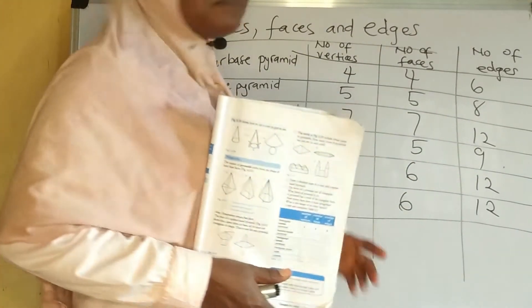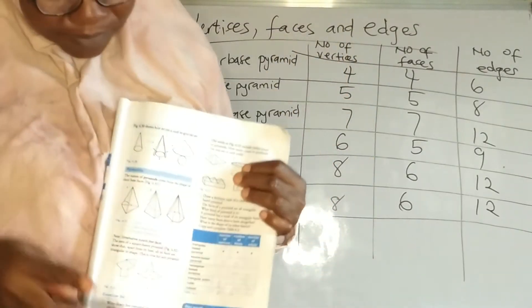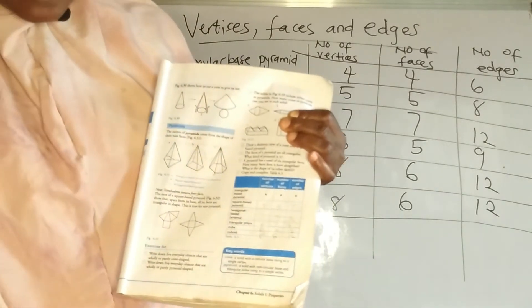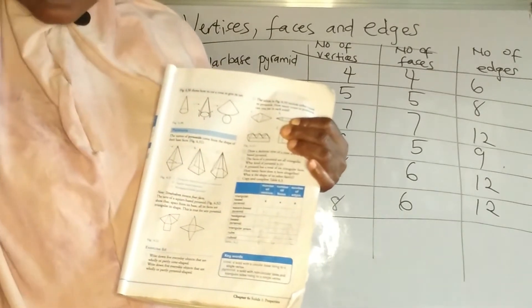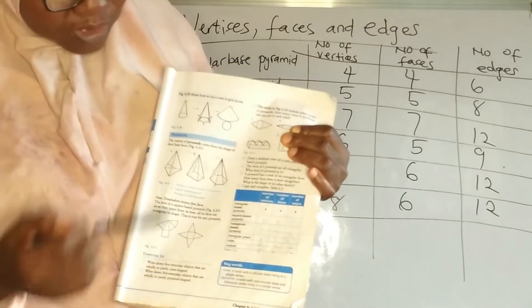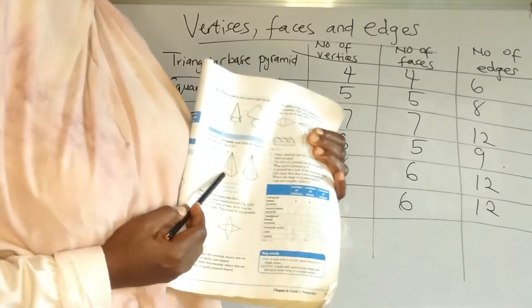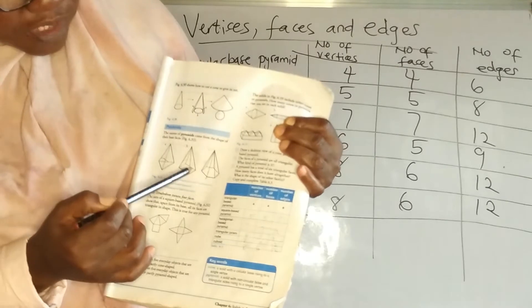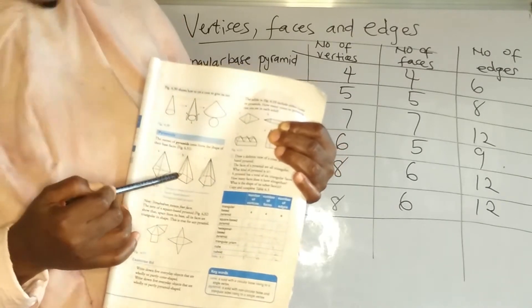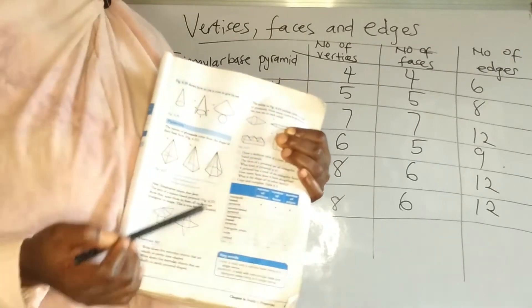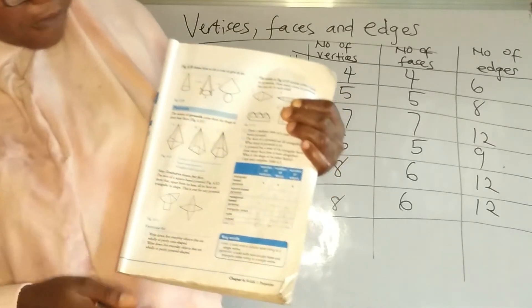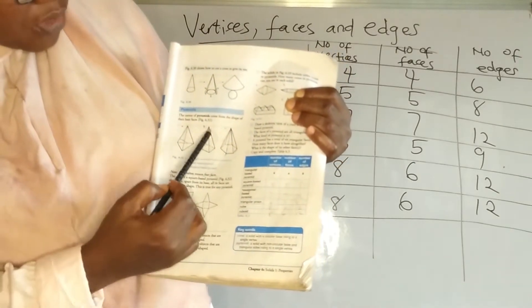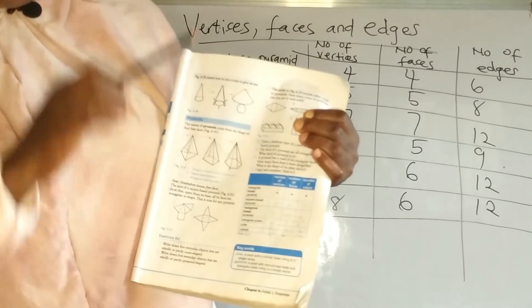Now we want to look at the vertices and edges of a square-based pyramid. How many vertices does it have? Vertices are just the corners. They said the vertices are five — let's check: one, two, three, four, and the one at the back is the fifth one. So it has five vertices. Now the number of faces: the base itself is one, then we have two, three, and the one at the back is four.